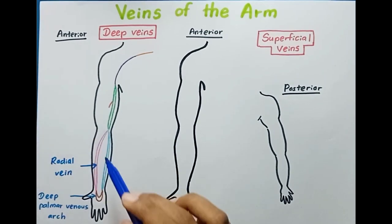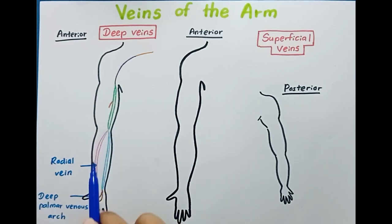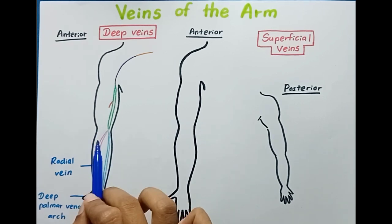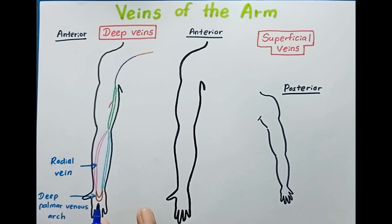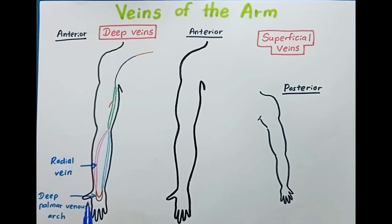In this light blue color you can see the ulnar vein. It runs along the ulnar artery and drains the medial aspect of the forearm, with its origin from the medial side of the deep palmar venous arch.